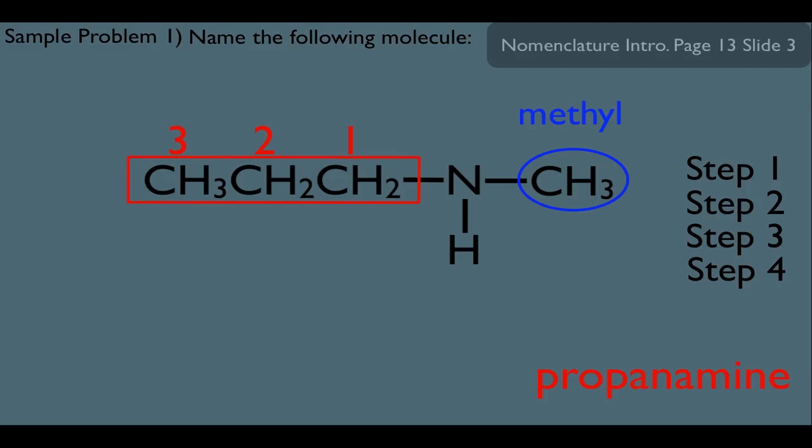He's not connected to any of the numbered carbons in the main chain. So the way we express this in amines is we say N-methyl. Think about what that means. It's saying on the nitrogen, there is a methyl. And that's exactly what we have. And to finish this name off, we need to put a one here. So the name of this molecule is N-methyl-1-propanamine.